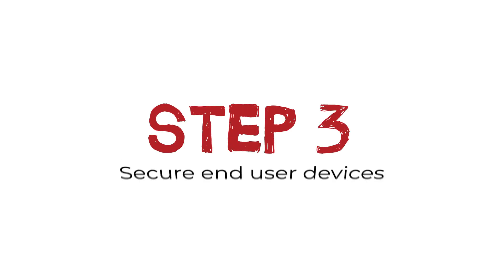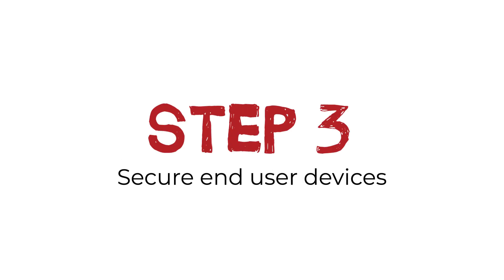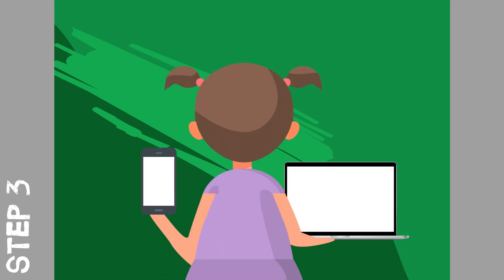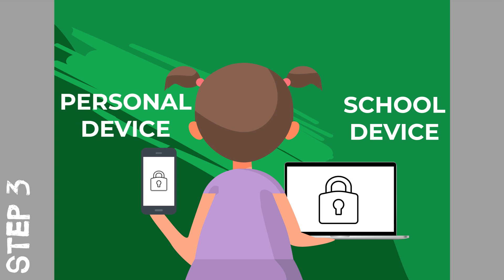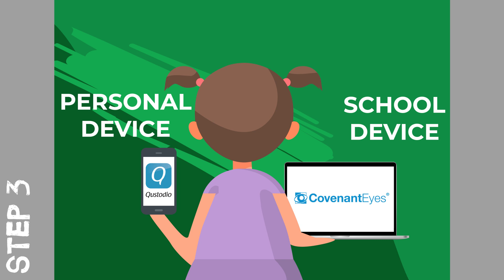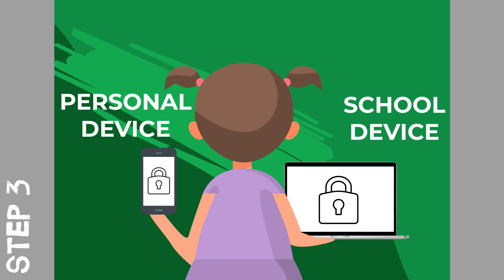So far, so good. Now let's look at the devices children have direct access to, like laptops, computers, tablets and smartphones. These can be school property or personal devices. All devices need to be secured with software such as Custodio, Covenant Eyes or NetNanny, to ensure that they are protected even if they make use of alternative network services. Step 3 is installing on-device filtering and blocking software for all devices used by children at school or at home.